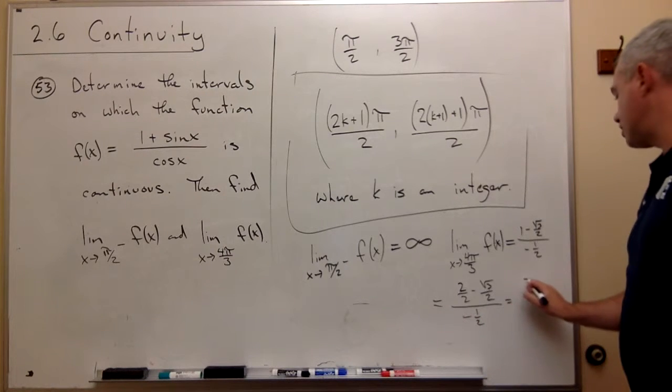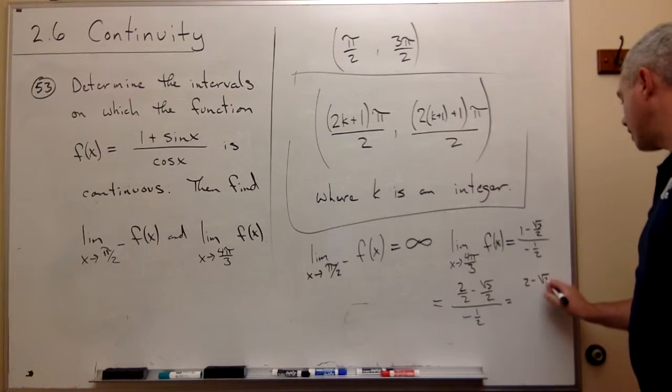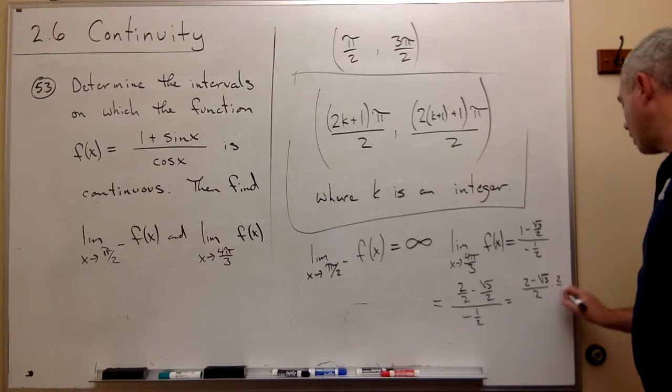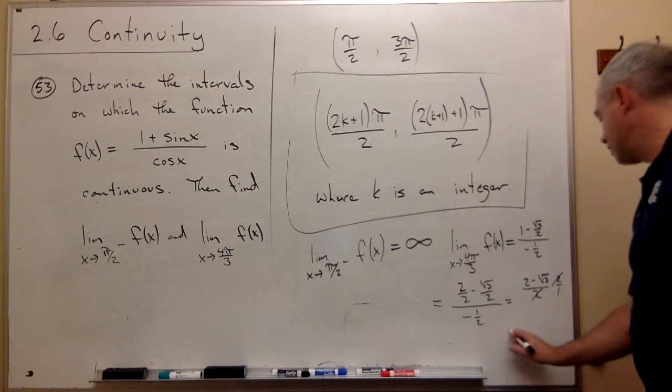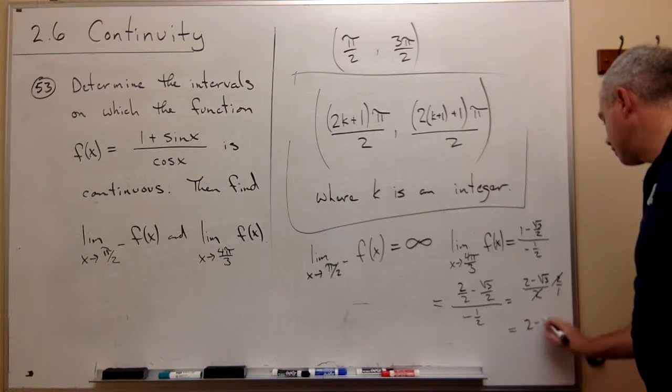In other words, this is 2 minus root 3 over 2 times 2 over 1. The 2s cancel and I'm left with 2 minus root 3.